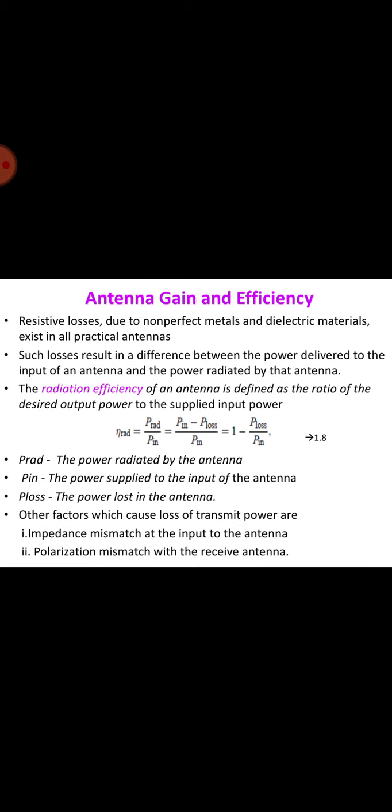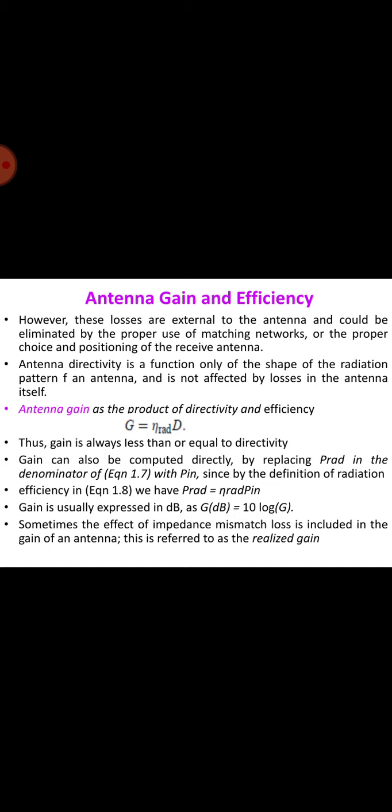Directive gain, or directivity, is a different measure which doesn't take an antenna's electrical efficiency into account. The term is sometimes more relevant in the case of a receiving antenna where one is concerned mainly with the ability of the antenna to receive signals from one direction while rejecting interfering signals coming from a different direction. However, these losses are external to the antenna and could be eliminated by the proper use of matching networks or the proper choice and positioning of the receiving antenna.